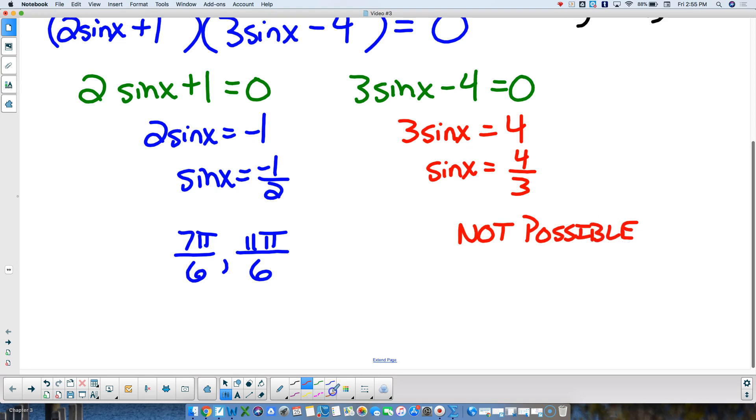So that means that my answers, then, are only 7 pi over 6 and 11 pi over 6.